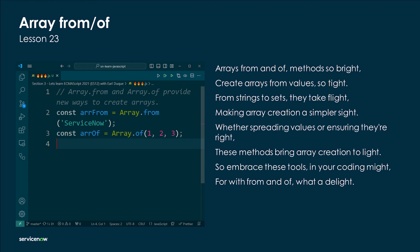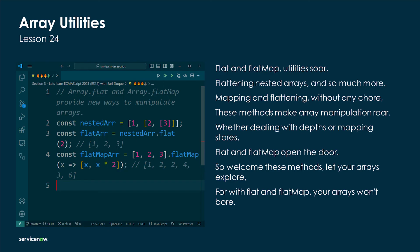Array.from and Array.of — methods so bright, create arrays from values so tight. From strings to Sets they take flight, making array creation a simpler sight. Whether spreading values or ensuring they're right, these methods bring array creation to light. So embrace these tools in your coding mind, for with from and of — what a delight!